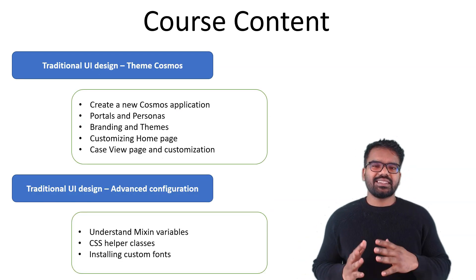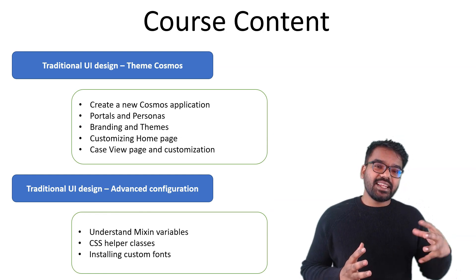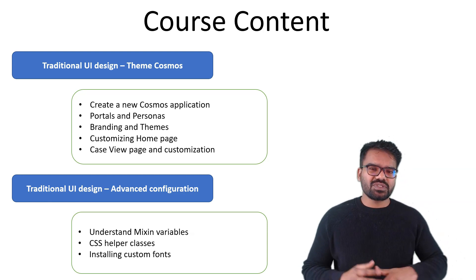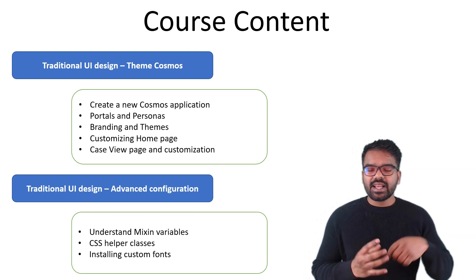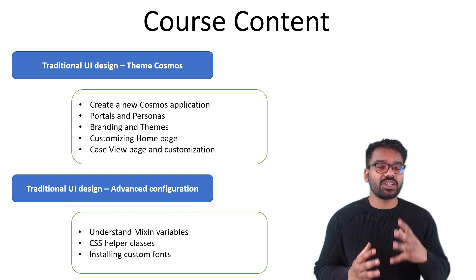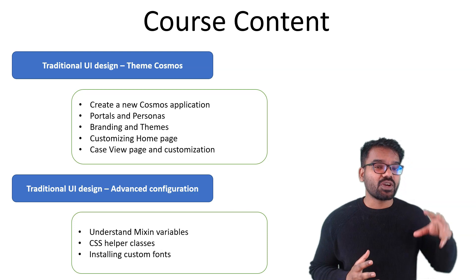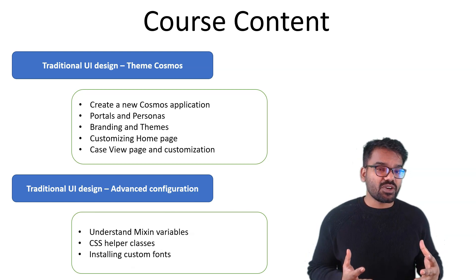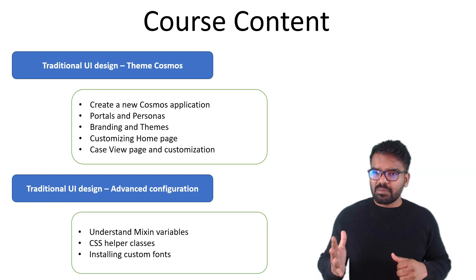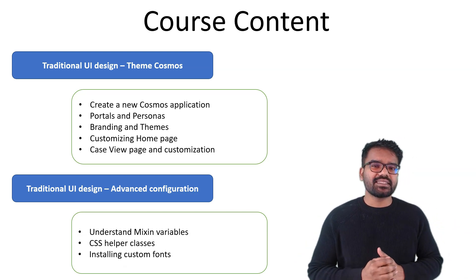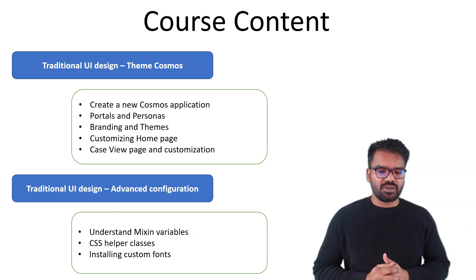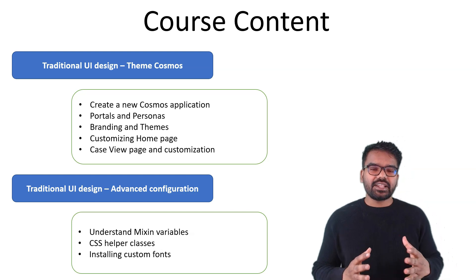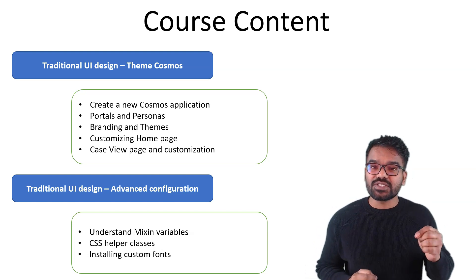Once you are clear with DX API, we get into Theme Cosmos. Theme Cosmos is a little like the UI kit but has its own standards. I will start with creating a new application using Theme Cosmos, then explore the out-of-the-box rules that get created — like portals, personas — everything done from App Studio. We do some customization on the home page and case view page. In the advanced configurations, I concentrate mostly on skin rules, extending from the Pega Masterclass basics. We will understand mixing variables, OOTB helper classes, custom CSS helper classes, custom fonts, and more.